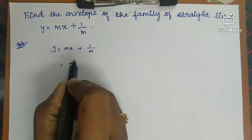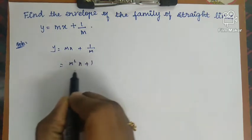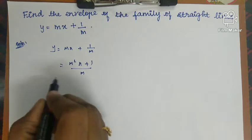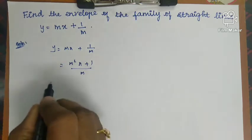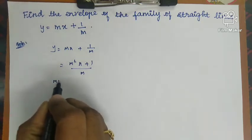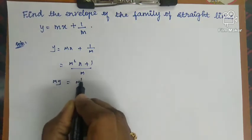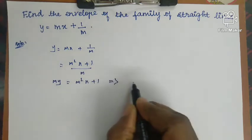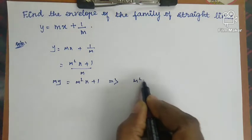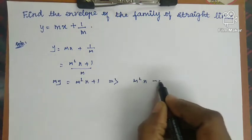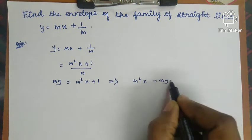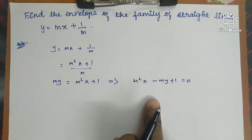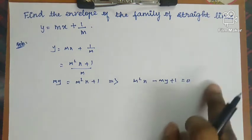We rewrite the equation. Multiply both sides by m: my = m²x + 1. Rearranging gives the quadratic equation m²x − my + 1 = 0. This is the quadratic equation in m.